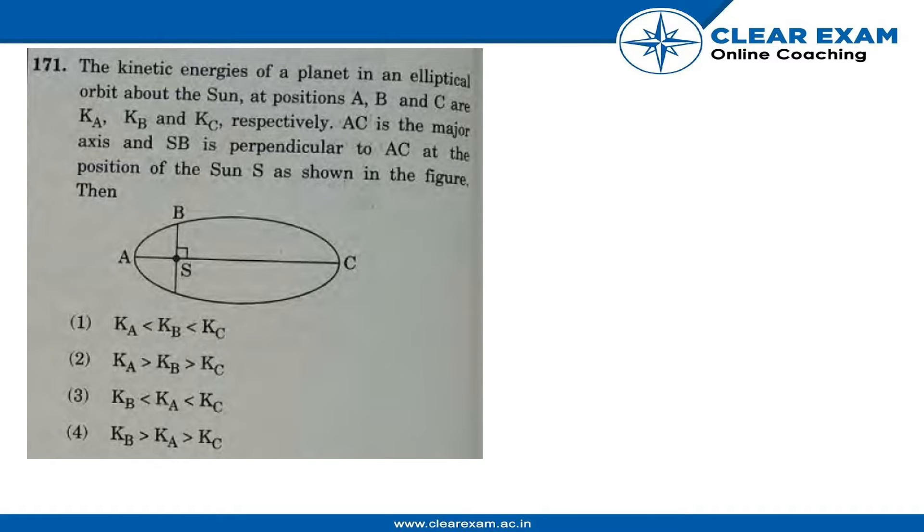The kinetic energies of a planet in an elliptical orbit about the Sun at positions A, B, and C are KA, KB, and KC respectively. AC is the major axis and SB is perpendicular to AC at the position of the Sun as shown in the figure.